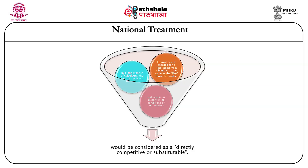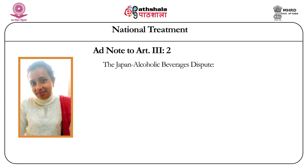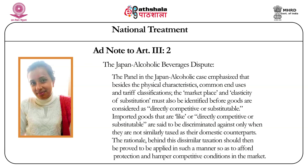The panel in the Japan Alcoholic Beverages dispute emphasized that besides physical characteristics, common end uses and tariff classifications, the marketplace and elasticity of substitution must be identified before goods are considered as directly competitive or substitutable. Imported goods that are alike or directly competitive or substitutable are said to be discriminated against only when they are not similarly taxed as their domestic counterparts. The rationale behind this dissimilar taxation should then be proved to be applied in such a manner so as to afford protection and hamper competitive conditions in the market.